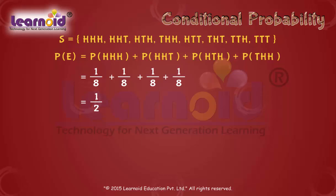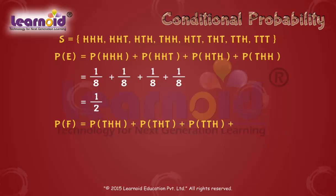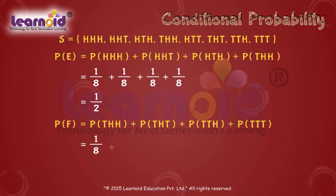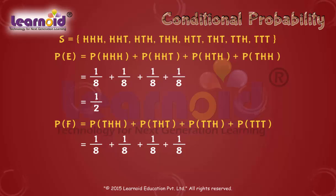Similarly, probability of event F is the sum of probabilities of individual outcomes in F, that is 1 by 8 plus 1 by 8 plus 1 by 8 plus 1 by 8, which is equal to 1 by 2.